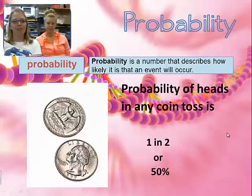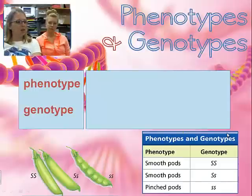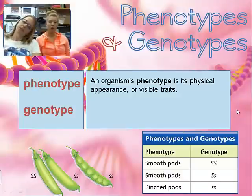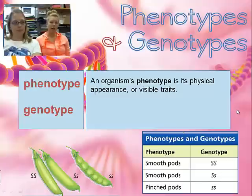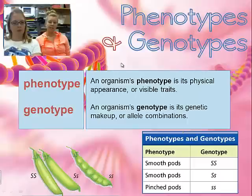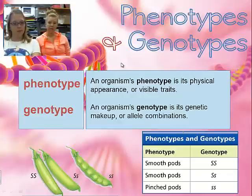Here are some tricky terms. A phenotype refers to how a characteristic actually looks — your hair color, your eye color. An easy way to remember it: phenotype starts with a P, so it's the physical appearance. Genotype, on the other hand, is the alleles — remember the capital letter versus lowercase letter — that combination is called the genotype. Be clear about whether you're talking phenotype or genotype.